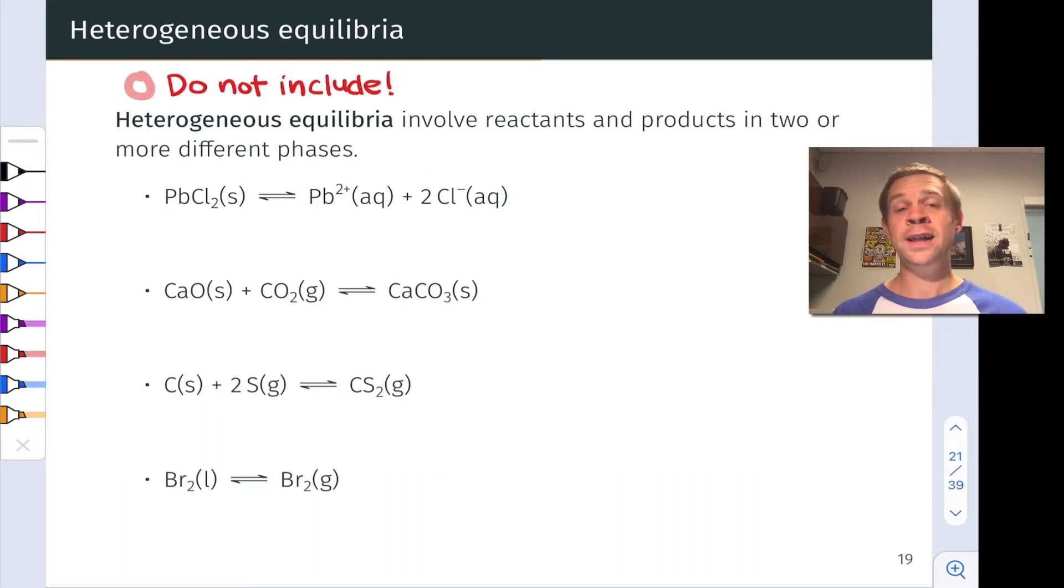What I'm going to do is circle in red any phases that tell us not to include that species in the reaction quotient. So for example, in the first case, we have PbCl2 solid becoming aqueous Pb2+ and two Cl- ions, a dissolution reaction. And PbCl2 is a pure solid, so it's not included. The reaction quotient includes nothing in the denominator, simply a factor of one, and Pb2+ concentration times Cl- concentration squared in the numerator.